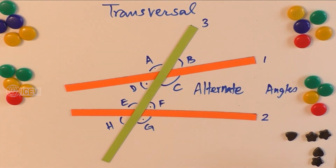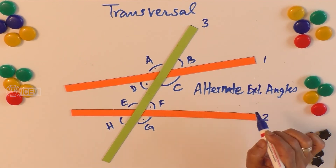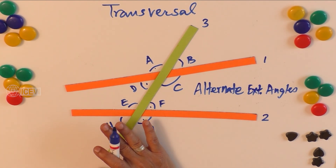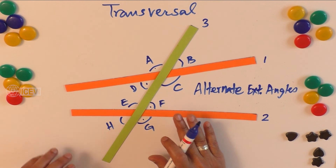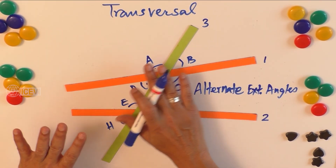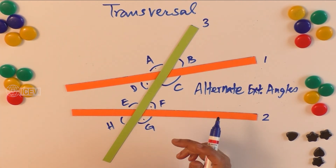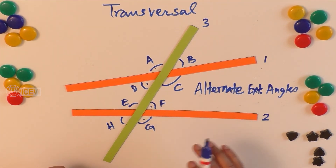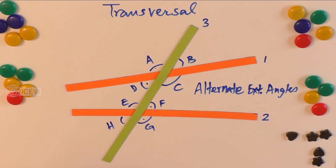So angles A and G are called alternate exterior angles. To summarize: we have alternate interior angles and alternate exterior angles. These are the key concepts we will use in defining the properties of the transversal. In the next exercise, we will develop these concepts through paper folding and prove that vertically opposite angles are always equal. Hope this introduction is useful — see you in the next video.